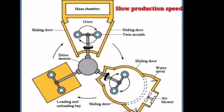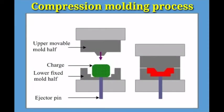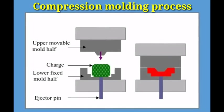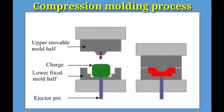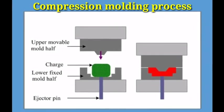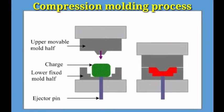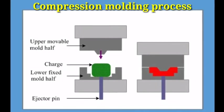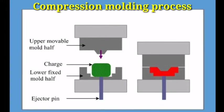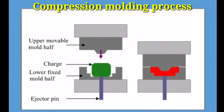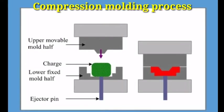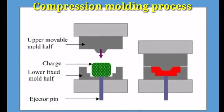Now we are going to see the compression molding process. A method of molding in which the molding material, generally preheated, is first placed in an open heated mold cavity. The mold is closed with a top force or plug member. Pressure is applied to force the material.